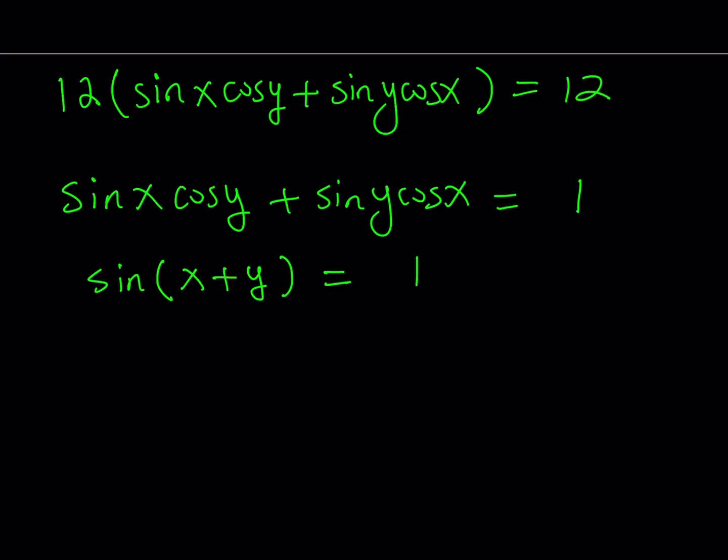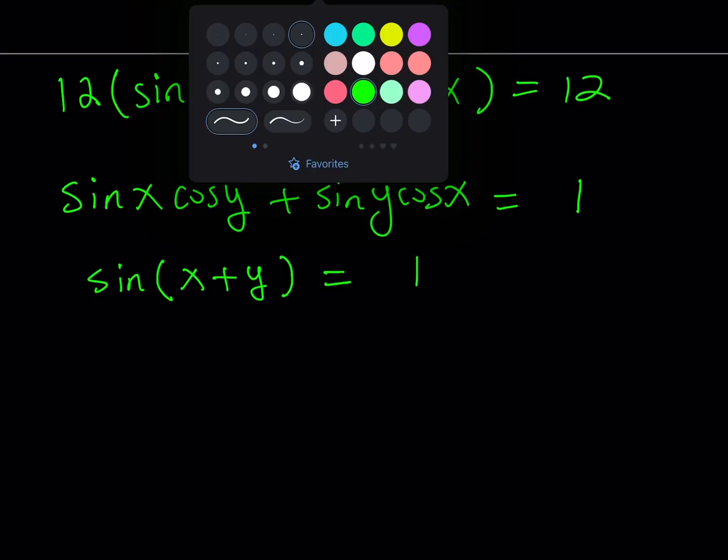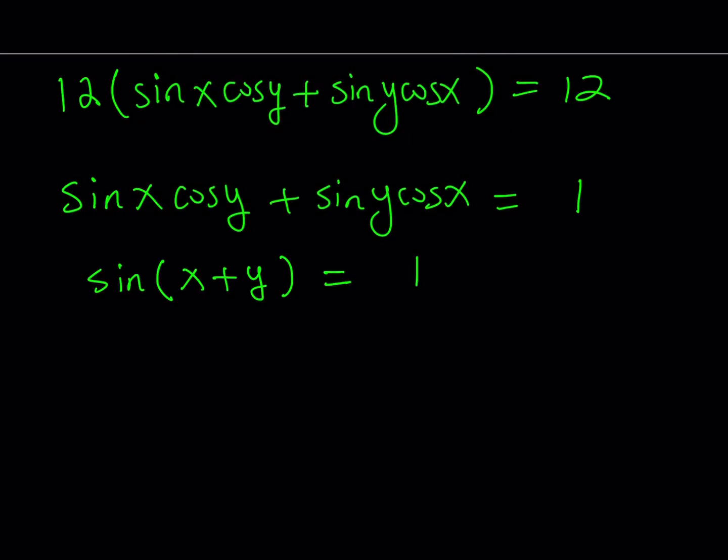Now, what is that supposed to mean? Let's go ahead and use our unit circle here. What does it mean for the sine of an angle to be 1? Well, that doesn't always happen, that's kind of rare. If you think about the unit circle, a circle whose radius is 1 and center at the origin, you're basically talking about the following.